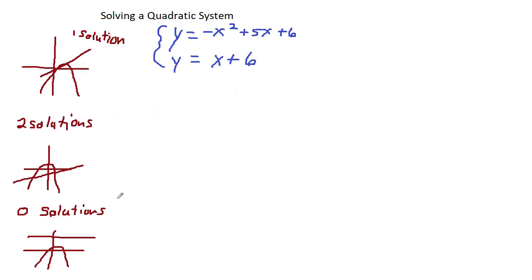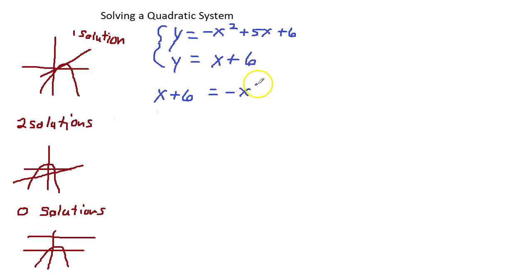So that means we're going to be solving for both x and y. If you look at both equations, they're actually solved for y. So I am going to substitute x plus 6 in place of the y in the first equation. So I'm going to have x plus 6 equals negative x squared plus 5x plus 6.